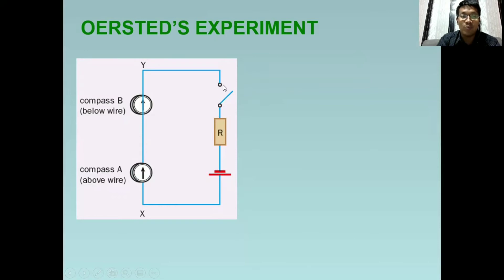Sa kaliwang bahagi, meron tayong dalawang compass. You have to take note that compass A is placed above the wire, while compass B is placed below the wire.